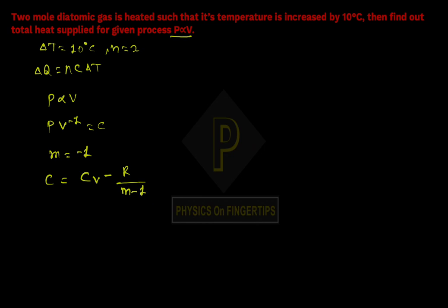Which gas is here? Diatomic. For diatomic gas, Cv = 5R/2.